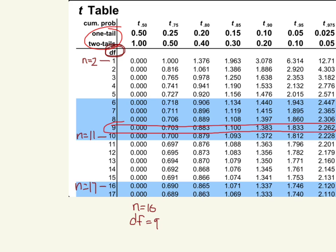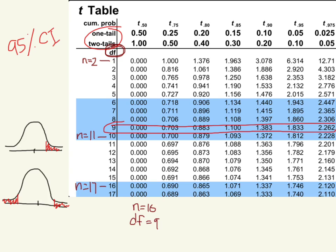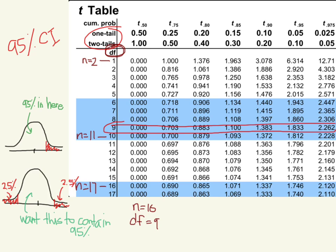Now let's look at the one-tail versus two-tail columns. These refer to the tails of the distribution — what percent of the distribution is in the tail. These are probability distributions where the total area equals 1. For 95% confidence intervals, we want 95% of the area in the middle. For a two-tail test, that means 2.5% is in each tail. For a one-tail test, 95% is in one side, leaving 5% in the other tail. So the one-tail critical value will be smaller than the two-tail, because the tail contains 5% instead of 2.5%.